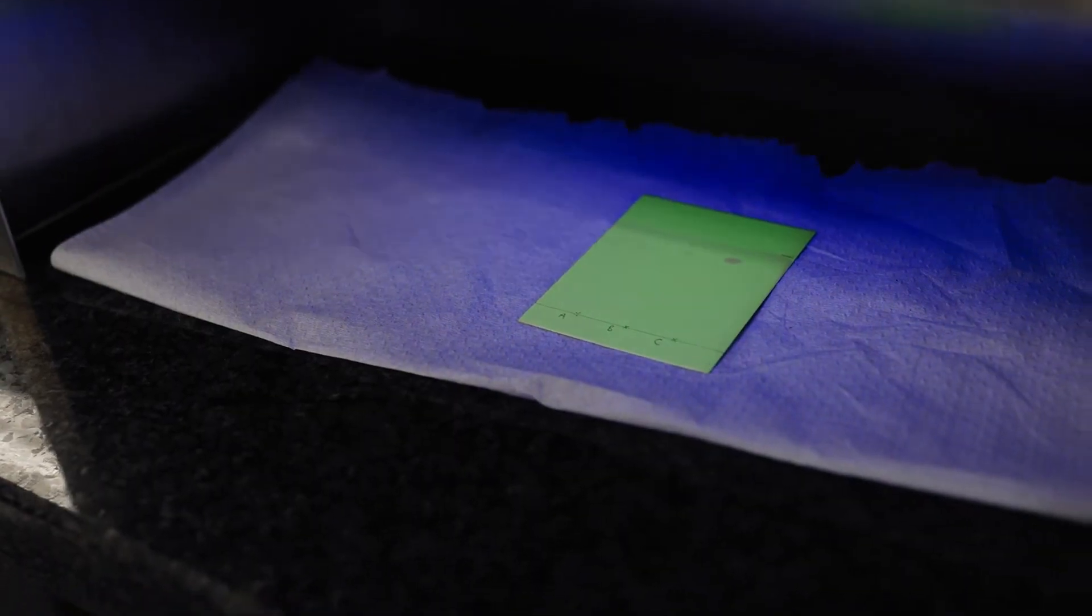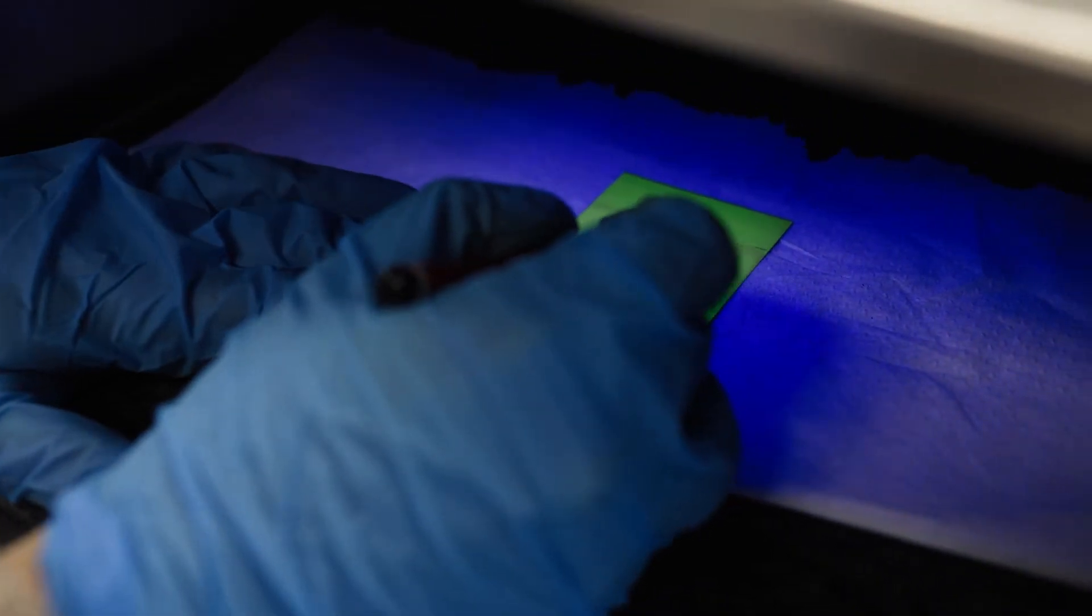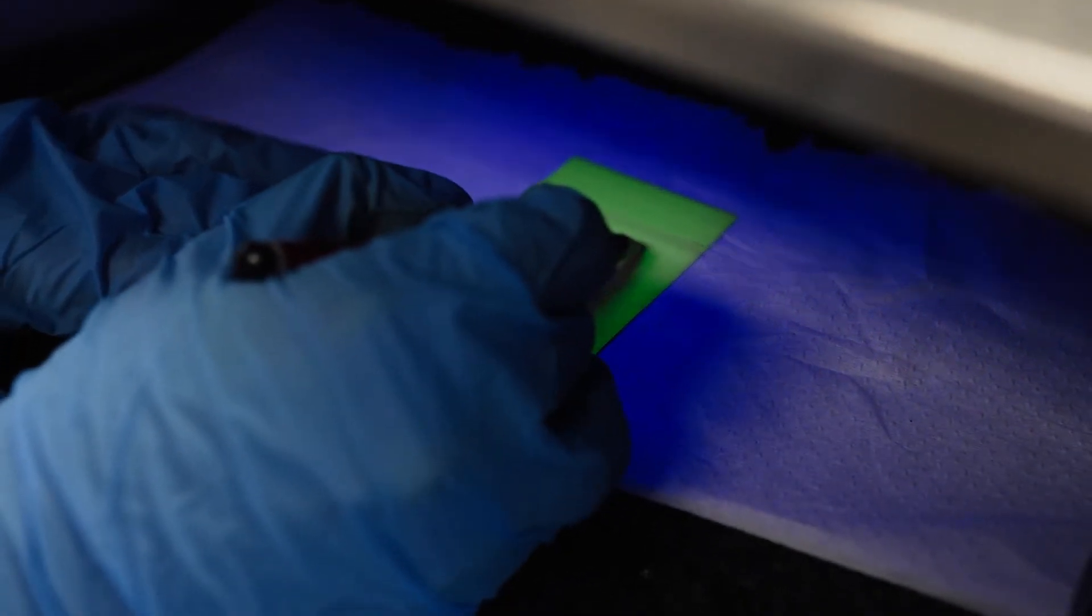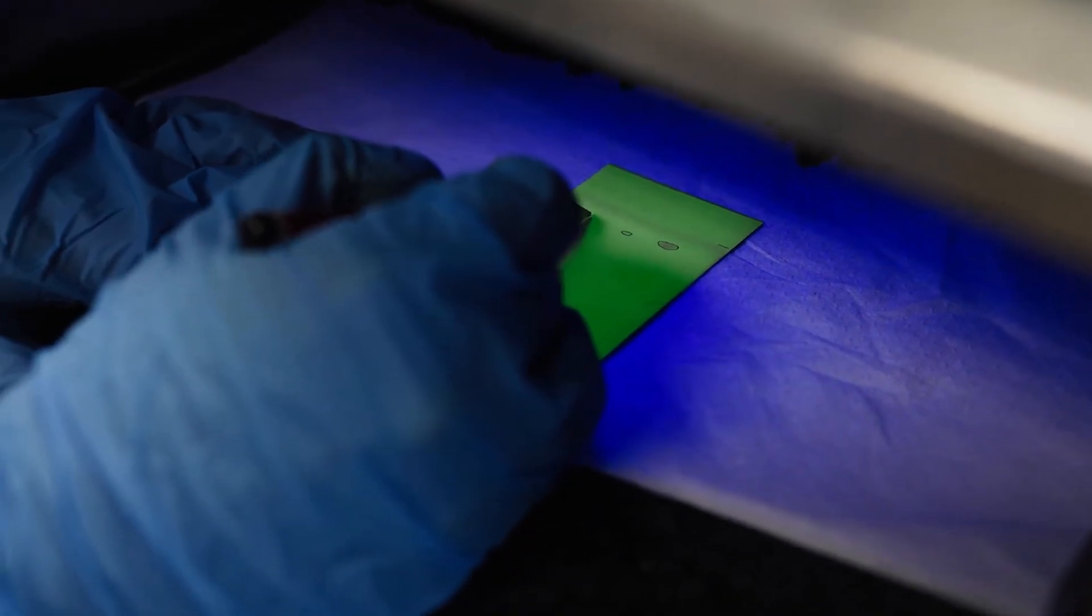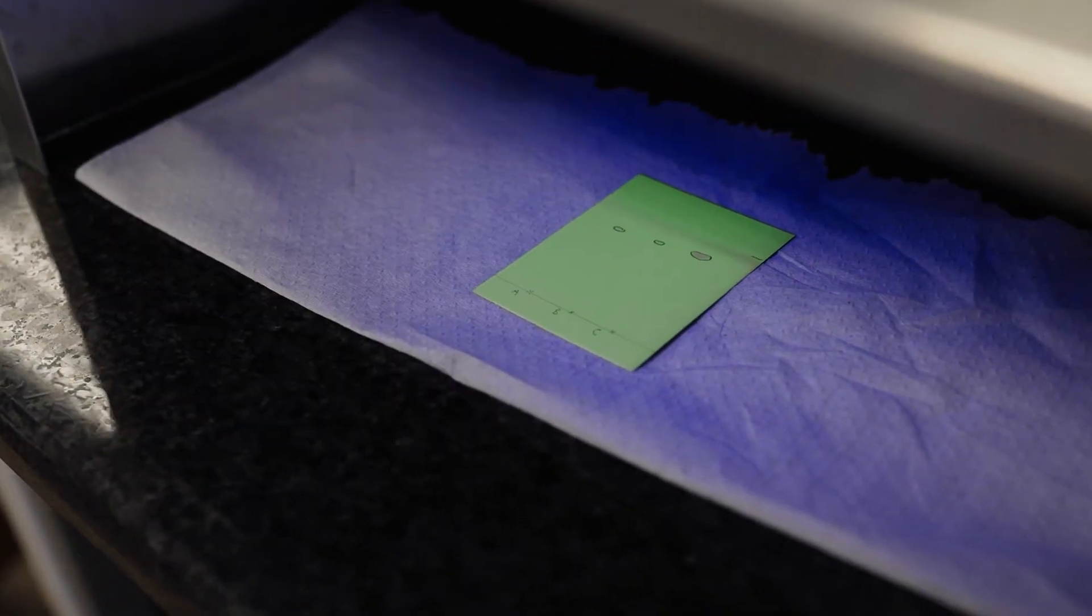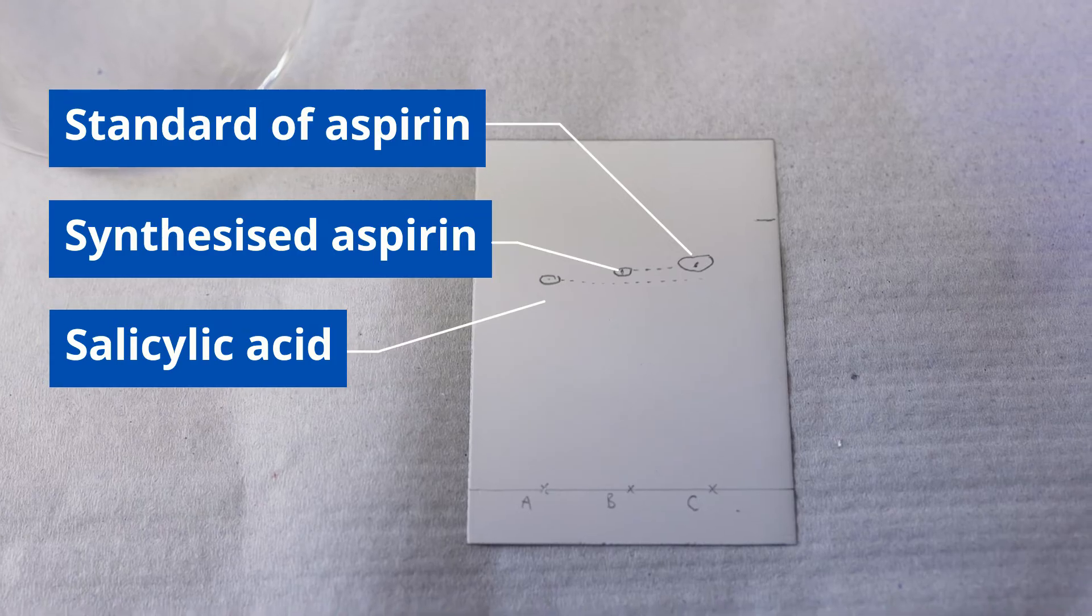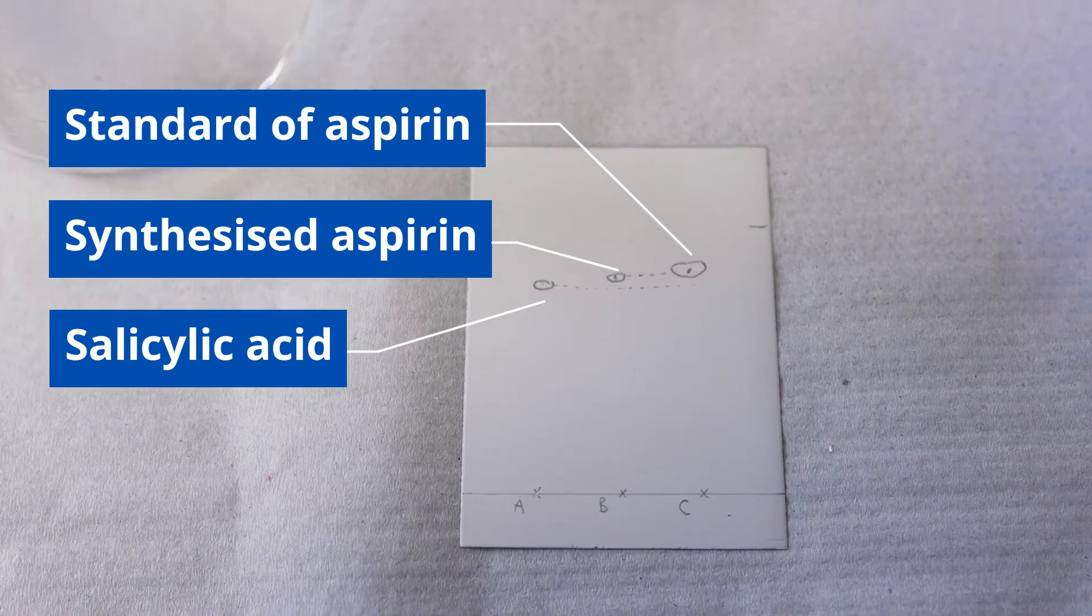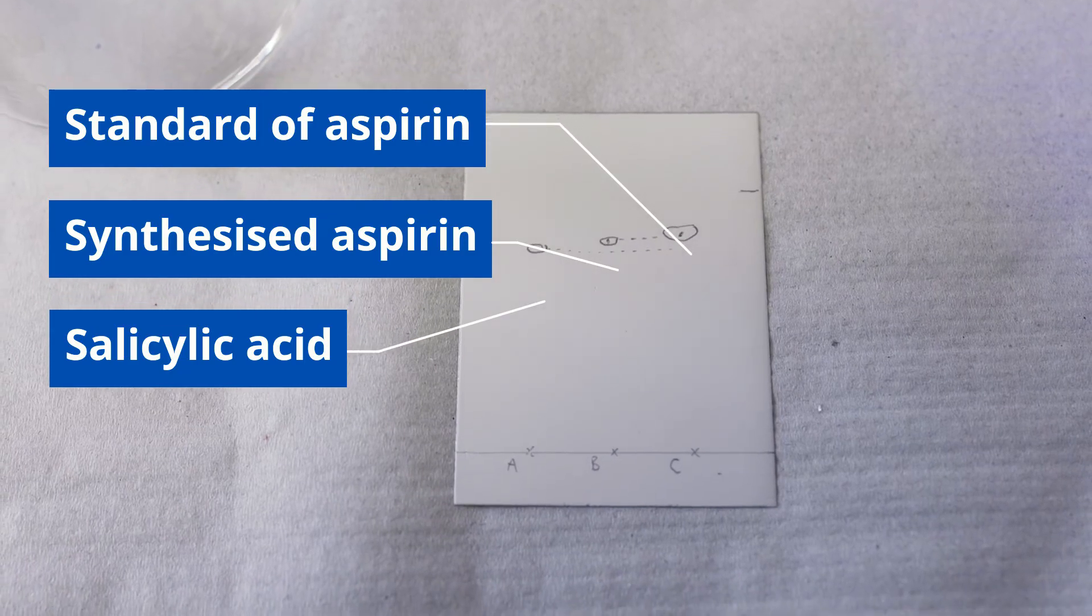So here you can see the three different dots. So I'll circle them. So this one we've clearly got a circle over there, over here, over there. This is what you're going to use to identify whether our synthesized aspirin formed aspirin completely or whether it still has salicylic acid in it.